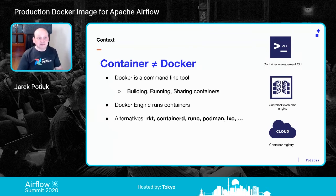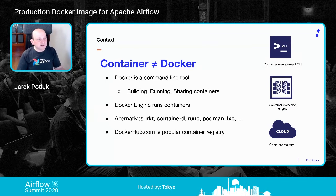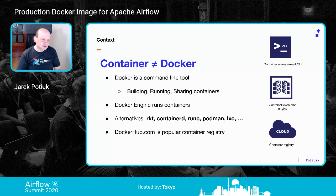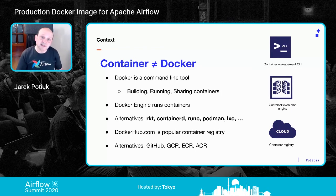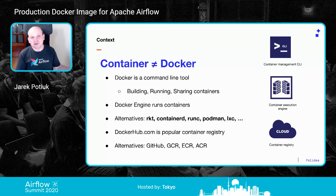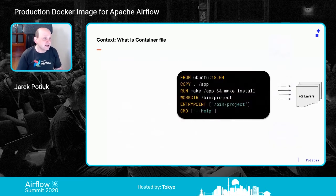Container images are compatible across different tools — you can run the same images on different container engines. For example, Kubernetes uses containerd and runC to run containers; it doesn't use Docker Engine, which isn't ideal for production for a number of reasons. There are also different registry implementations. Docker Hub is popular, but GitHub, Google, Amazon, and Azure all have their own registries. In Airflow, we use the GitHub container registry for caching and Docker Hub for official image publishing.